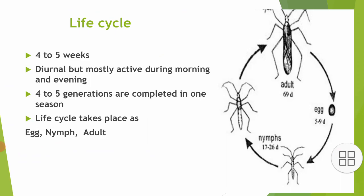Life Cycle: The life cycle is completed in 4–5 weeks. It is diurnal but mostly active during morning and evening. Four to five generations are completed in one season. The life cycle takes place as egg, nymph, and adult.